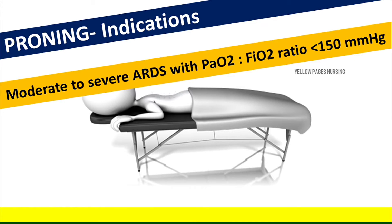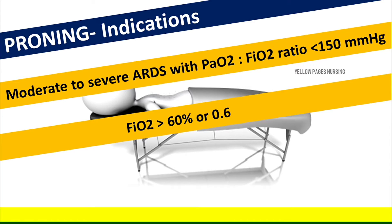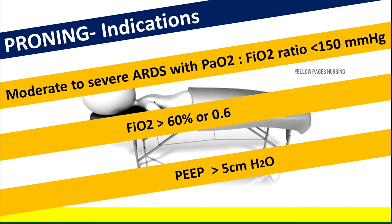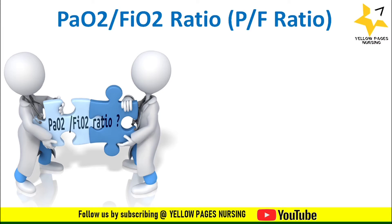Indications for proning: moderate to severe acute respiratory distress syndrome with a PaO2/FiO2 ratio less than 150 mmHg, when the patient needs more than 60% (or 0.6) of FiO2, and when PEEP is more than 5 cmH2O.